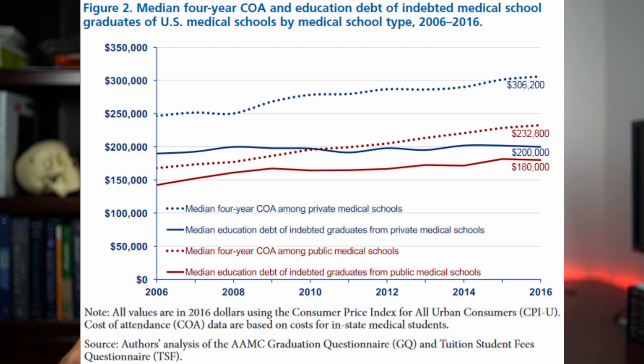It also shows the median debt that a graduate has from public versus private medical schools. For private medical schools, the median cost of attendance is around $306,000, whereas for public schools it's around $332,000. For median debt, private medical school graduates have around $200,000 of debt, while public school graduates have around $180,000. Keep in mind these are medians, not averages — half of graduates pay more and half pay less.